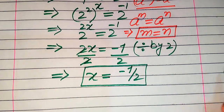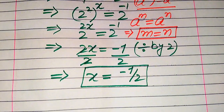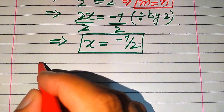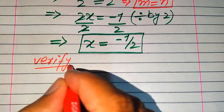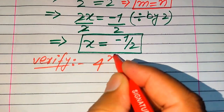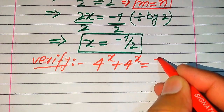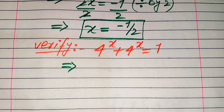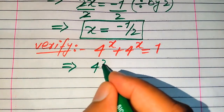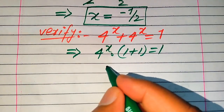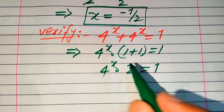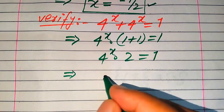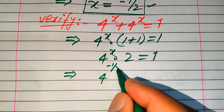This is the value of x we obtained. Now further in the next steps we need to verify whether this value of x is a solution or an extraneous root. For verification, we copy down the given question statement: 4 to the power of x plus 4 to the power of x equals 1. We take common 4 to the power of x, giving us 1 plus 1 equals 1, so 4 to the power of x times 2 equals 1. We now substitute x equals minus 1 over 2 into 4 to the power of x times 2 equals 1.